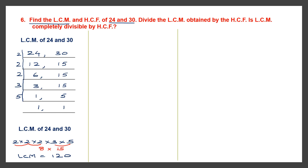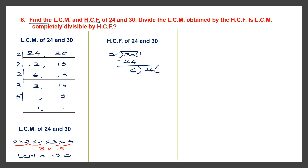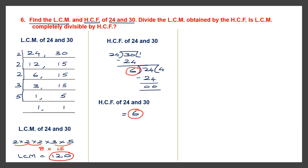Now we have to find the HCF. We can use the division method, which is the easiest. So we divide 30 by 24. 24 ones are 24, and 30 minus 24 is 6. We continue to divide: bring 24 inside and divide 24 by 6. 6 fours are 24. So we have found the HCF. The last divisor that gives remainder 0 is the HCF. So HCF of 24 and 30 is 6.